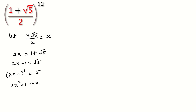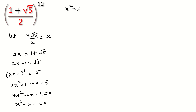So 4x² − 4x − 4 = 0. Taking out the common factor of 4, we get x² − x − 1 = 0, and from here x² = x + 1.